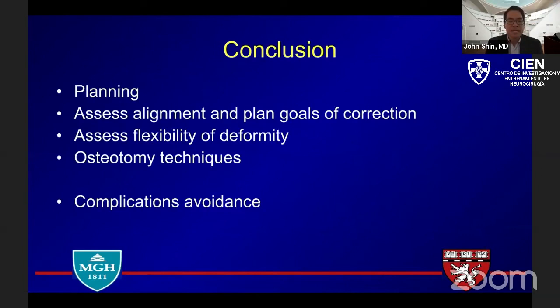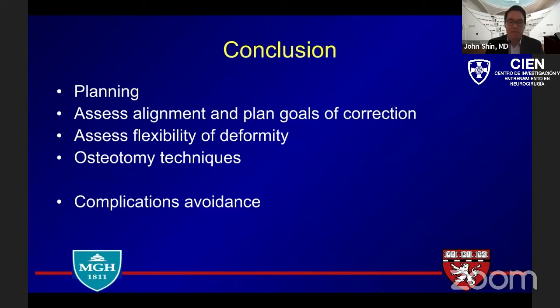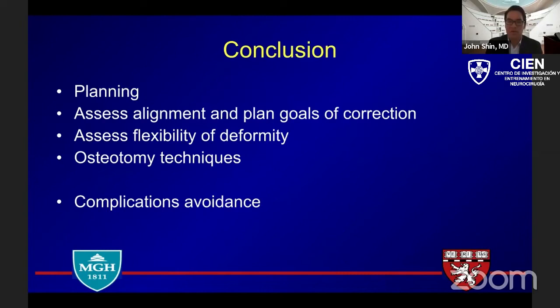Key takeaways: planning is critical and occurs before the patient reaches the operating room — assessing alignment, setting goals of correction, evaluating flexibility, and then applying osteotomy techniques. Additional considerations include complication avoidance, medical frailty, preoperative optimization, rehabilitation, and bone density augmentation. These are all bundled into the care of these very complex patients. Thank you for the opportunity to join this wonderful international meeting.